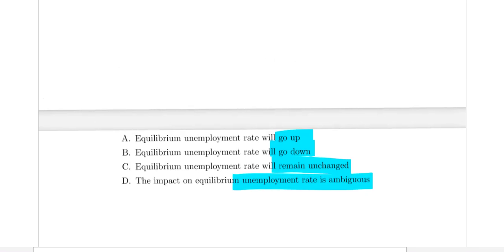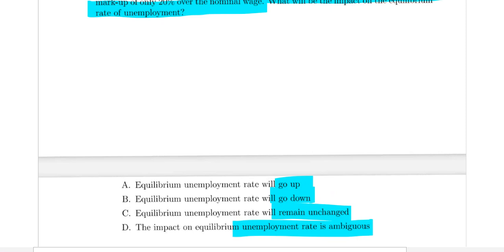W/P equals 1 minus U. Initially, price setting was P equals 1.25W, substituting this...